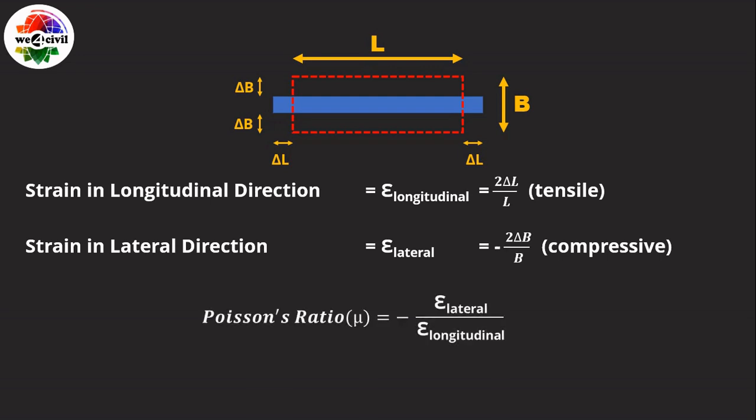As per Poisson, for an isotropic material within the elastic limit, the ratio of lateral strain to longitudinal strain is a constant, known as Poisson's ratio, denoted by the letter mu. In the equation, Poisson added a negative sign to make the Poisson's ratio a positive value, because the lateral strain is compressive while the longitudinal strain is tensile.